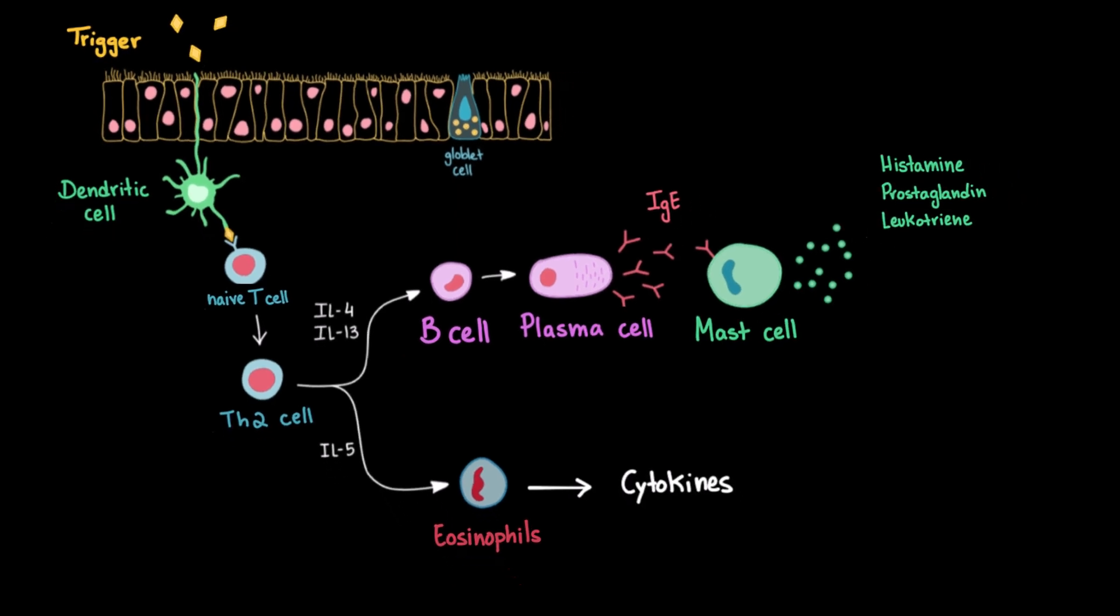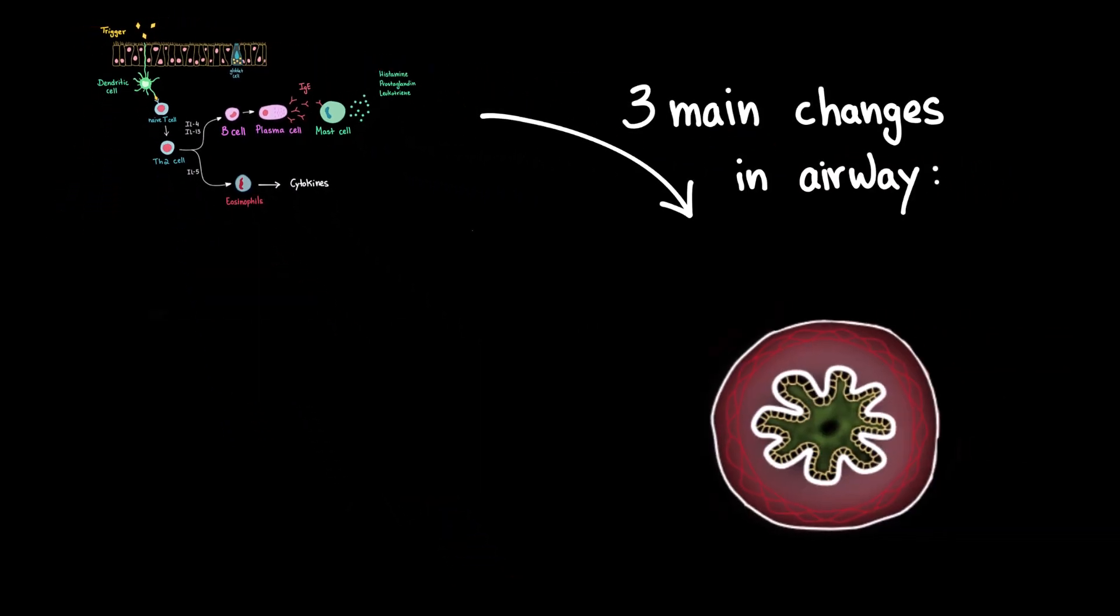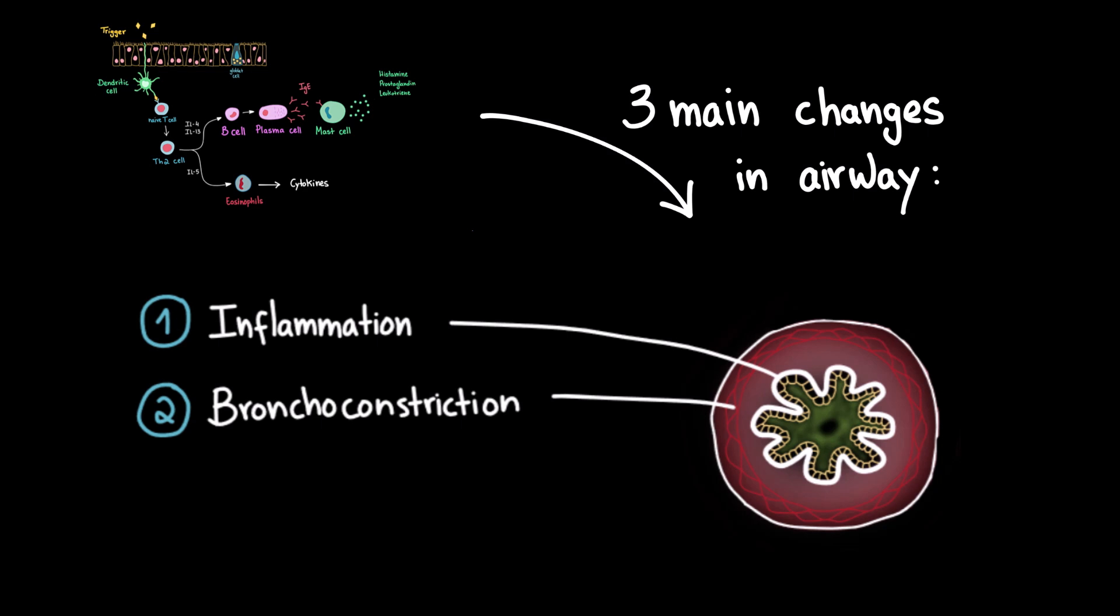Now, both these pathways lead to three main changes in the airways that are important to know. First is inflammation. Immune cells flood into the airway lining, causing swelling of the tissues and making them hypersensitive to even minor irritations. Second is bronchoconstriction. The smooth muscle that surrounds the airways contracts, narrowing the passage and reducing airflow. And finally, there's increased mucus secretion. Inflammatory mediators stimulate the glands to produce thick, sticky mucus, which can further block the airway. Together, these changes make it much harder to breathe.